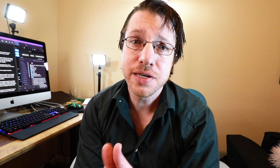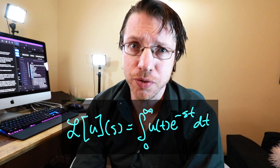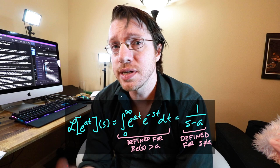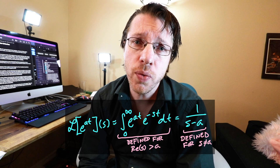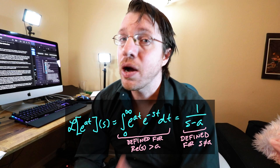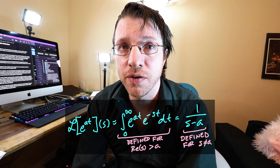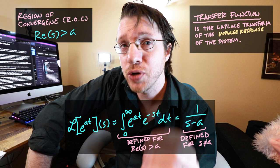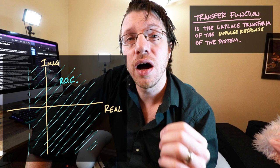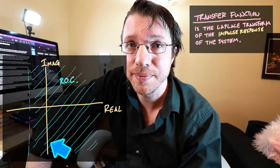BIBO stability is probably the easiest one to explain. If you remember our statements about the Laplace transform, we defined it in terms of an integral. If we have an exponential function e^(at), we know that integral turns into 1/(s − a). We only have agreement between that rational function and the integral representation of the Laplace transform when the real part of s is greater than a — this is the region of convergence. To verify BIBO stability, you take a look at the transfer function, which is the Laplace transform of the impulse response function. If the region of convergence of that Laplace transform includes the imaginary axis, then your system is BIBO stable.